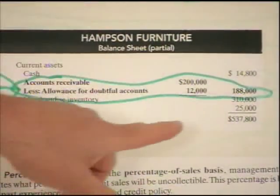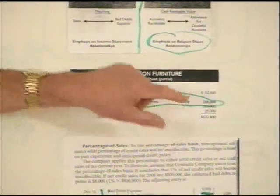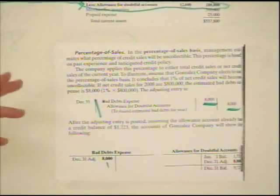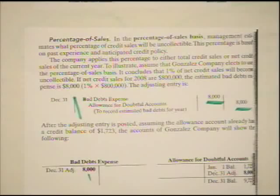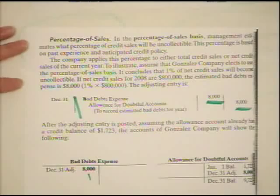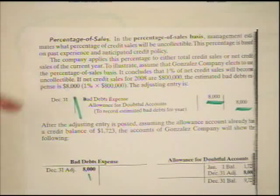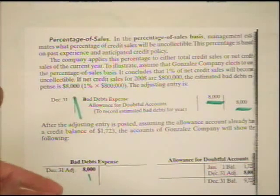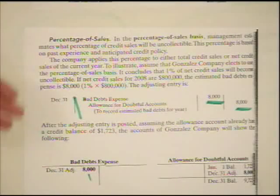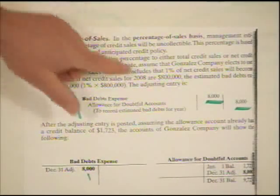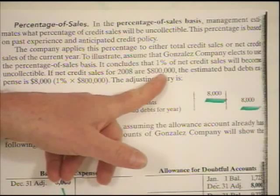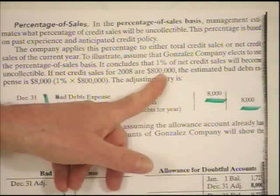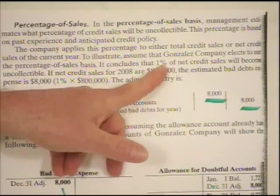Now, how do we determine what this allowance balance is? It depends on which of the two methods we use. For the percentage of sales method, management knows from doing business over the years that for every dollar of credit sales, they're not going to collect everything. So management comes up with a percentage they know they don't collect and simply multiplies it by total net credit sales for the year. In this example, the company had $800,000 in net credit sales in 2008, and they've estimated that 1% of those sales will never be collected — so they multiply $800,000 by 1% and come up with $8,000.